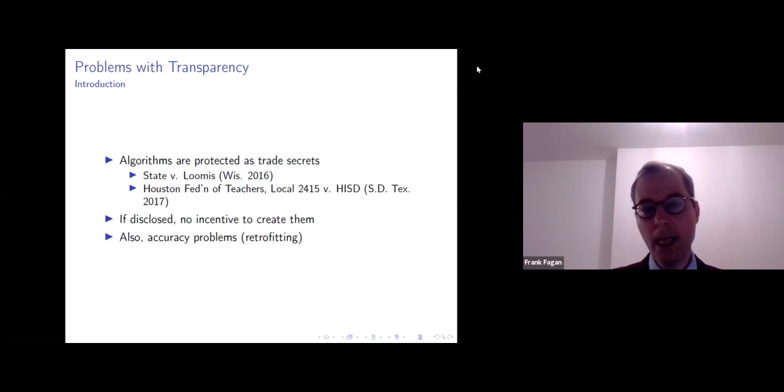But what this paper points out, this paper, Competing Algorithms for Law, is that if all of the data is available to defendants, and if the specification of the algorithm is made available to defendants, there could also be accuracy problems. And I'll go into exactly how this works and the intuition behind what we call retrofitting.